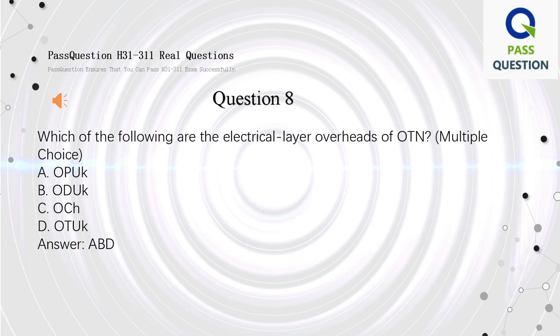Question 8. Which of the following are the electrical layer overheads of OTN? Multiple choice. A. OPUk. B. ODUk. C. OCH. D. OTUk. Answer: A, B, D.